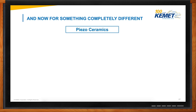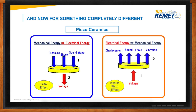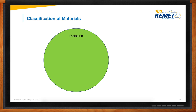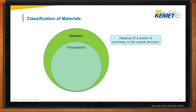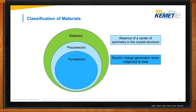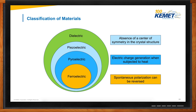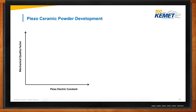It's piezoceramics. This is where mechanical energy gives the output — or the other way around. There is a classification of materials that drives to different types. The basic one is the dielectric. Inside the dielectric, if there is an absence of a center of symmetry in the crystal structure, it will be piezoelectric. If the piezoelectric material can generate an electric charge when there is heat, it's pyroelectric. And inside that group, if there is a possibility of spontaneous polarization that is reversible, it will be ferroelectric. So all the materials we will discuss further are ferroelectric type.